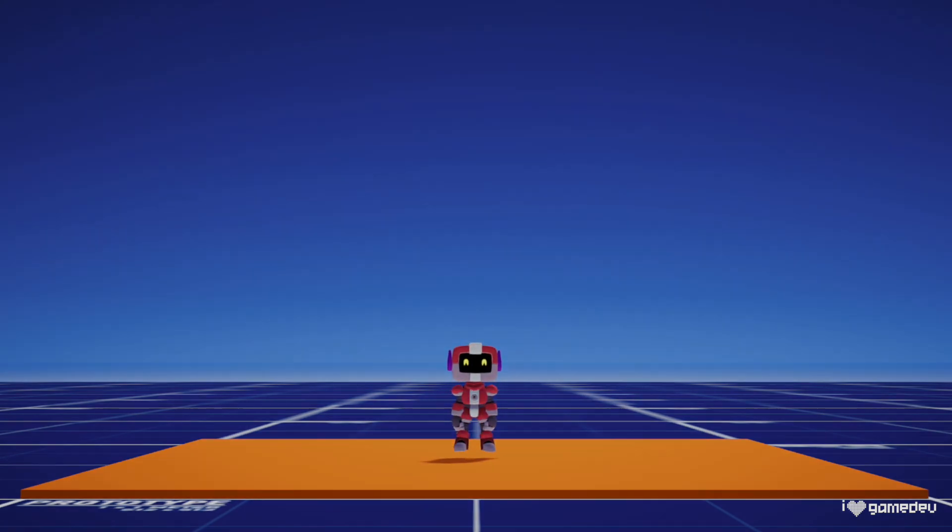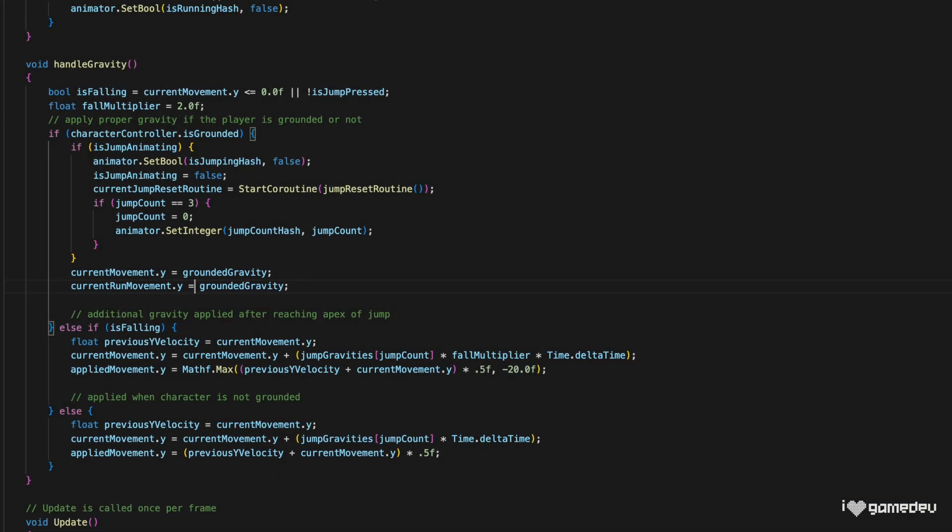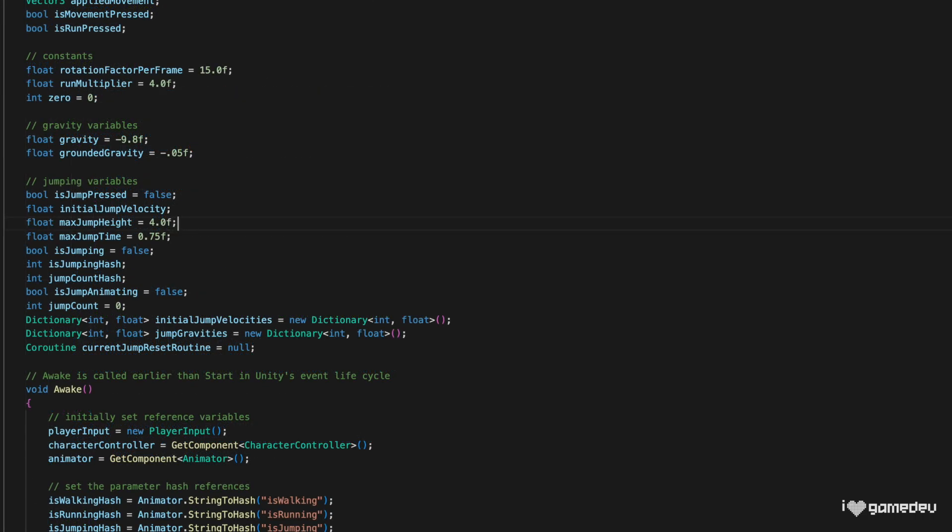One last note is that we want to set the appliedMovementY value in handleGravity to the groundedGravity when the character is grounded, because appliedMovement is always being used to control the character's movement now. And we can easily modify the jump height using our maxJumpHeight variable thanks to our logic from the previous episode.